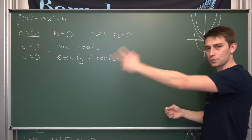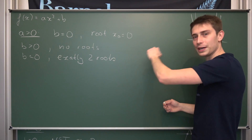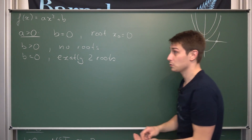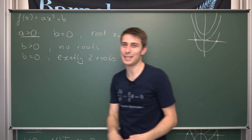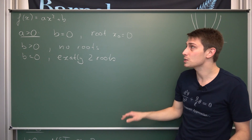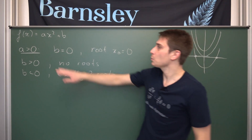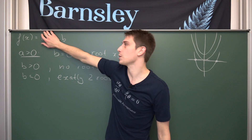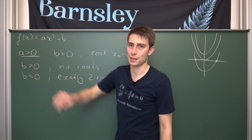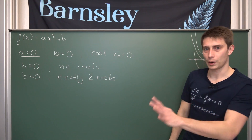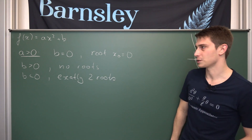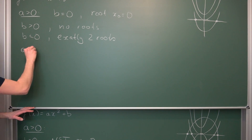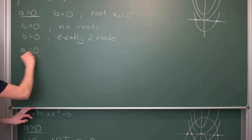Those were the first three cases. Now off we go to the next three. I do not want to discuss a = 0 because then we would just have a constant function — that's a special case we talked about in the linear functions playlist already.